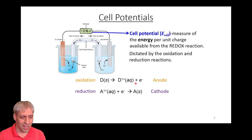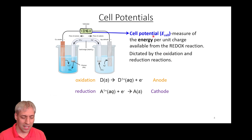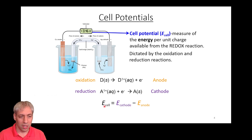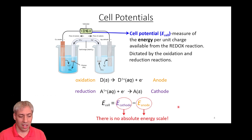We have a half reaction at the anode where oxidation is occurring — the species is giving up electrons. We have a half reaction at the cathode where reduction is occurring — the species is accepting electrons. The cell potential is dictated by how easily one species gives up electrons and how much the other wants to take those electrons.